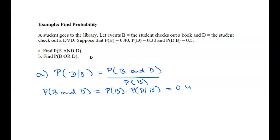Solving for P of B and D, we get 0.4 times 0.5, which equals 0.2.